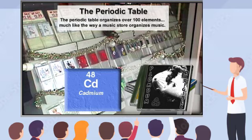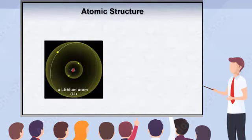However, in addition to providing order, the periodic table also provides a great deal of information about each element. The periodic table arranges elements according to their atomic structure.